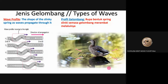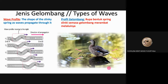Before we learn about the type of wave, let's see what does it mean by wave profile. Wave profile is the shape of the slinky spring as the wave propagates through it. For example, the transverse wave — the slinky spring will move up and down. For the longitudinal wave, it will move from left to right, and it will produce the compression part and also the rarefaction part. That is the wave profile.